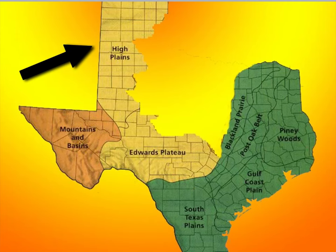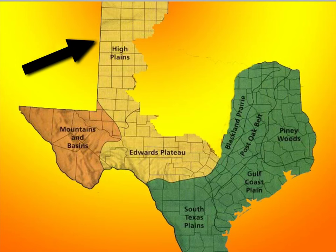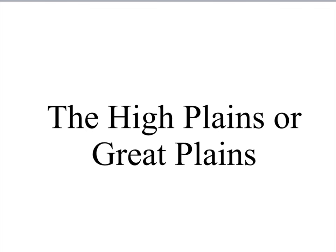This area in Texas is the Panhandle. A Panhandle is a narrow strip of land that is joined to a bigger piece of land. On a map, it looks like the handle of a pan. The land in the High Plains is higher but more level than the other regions. While it does not contain the mountains that the mountain and basin region does, it does have higher plains than the rest of Texas.